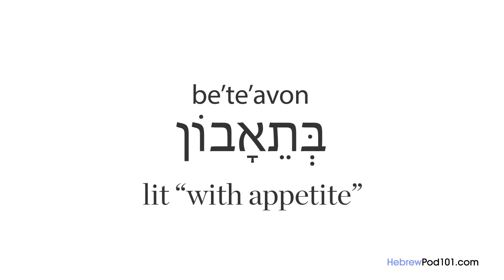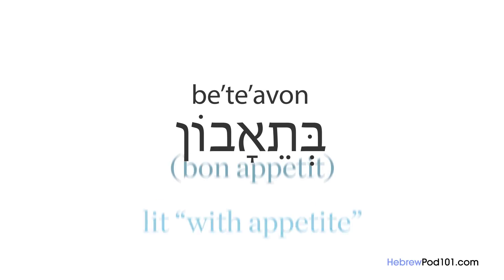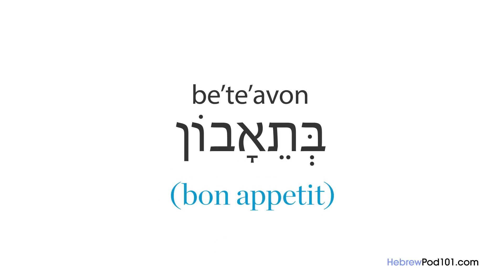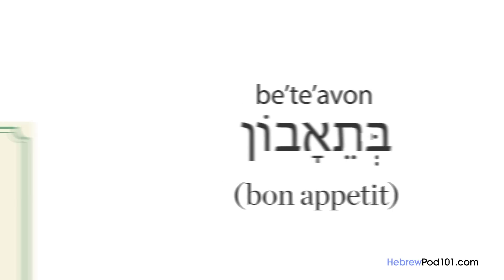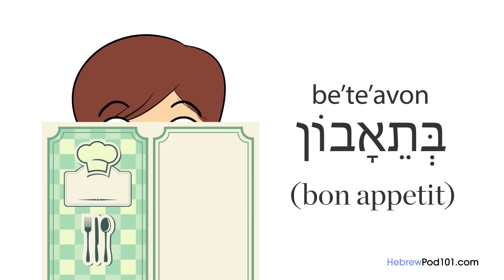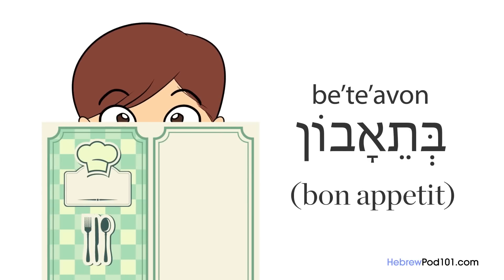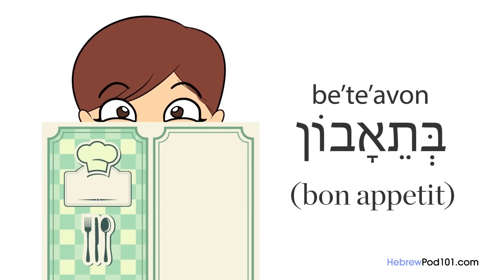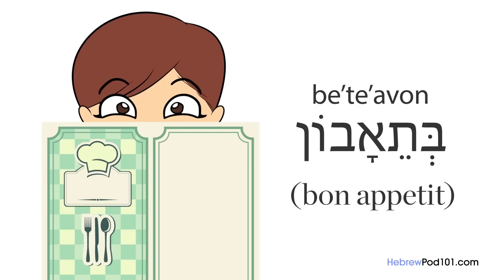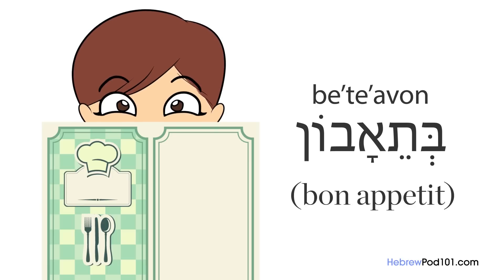The next expression is very useful: 'b'te'avon,' which literally means 'with appetite' — the Hebrew equivalent of the French 'bon appétit.' You'll hear it from waiters in restaurants and from hosts presenting a dish, and you can use it when eating with other people right before taking the first bite.